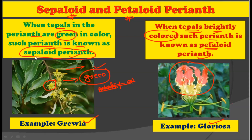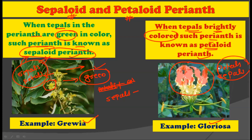It is important to note that if the color of sepals matches with the color of petals — that is, if the sepal color is similar to the color of petals — such a type of Perianth is called petaloid Perianth. Conversely, if the color of petals matches with the color of sepals, it is called sepaloid Perianth.